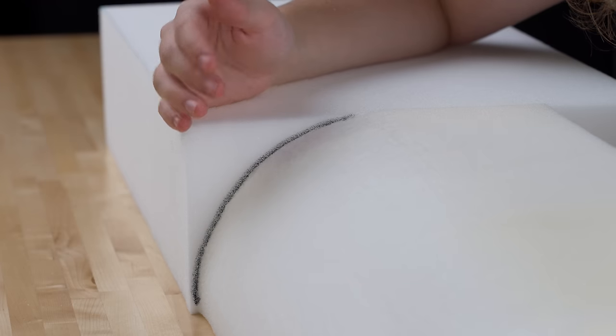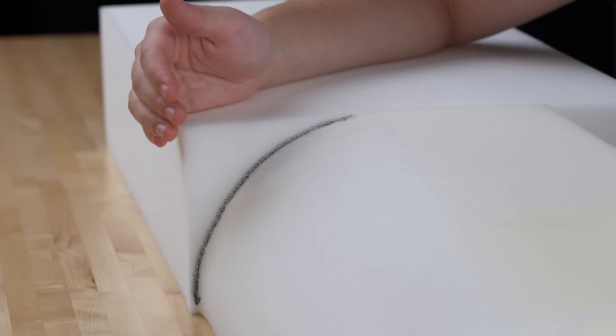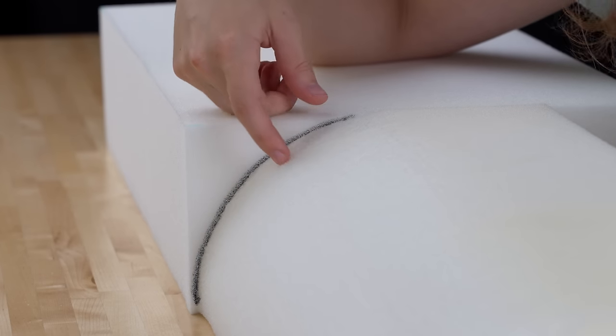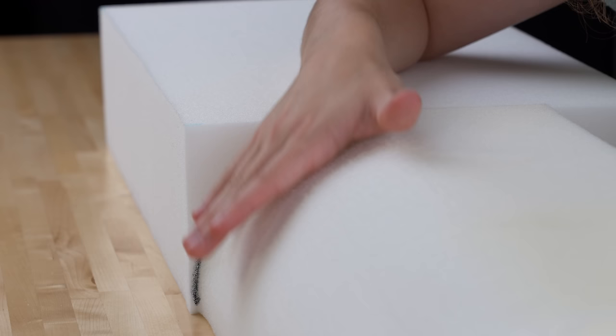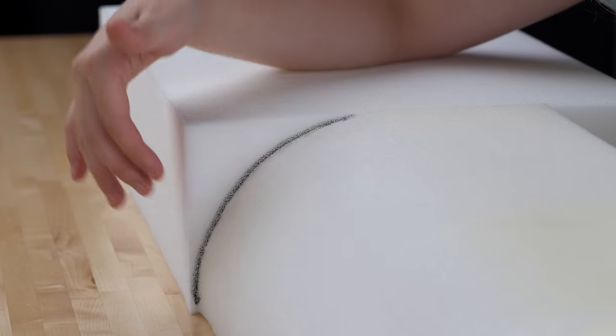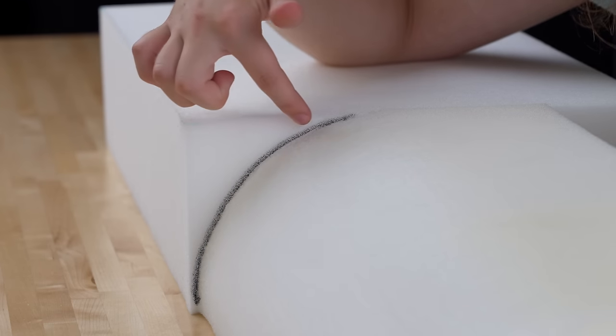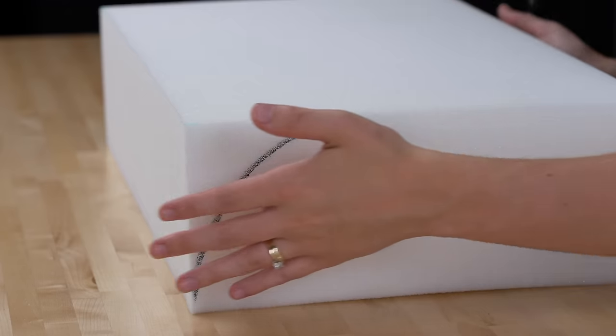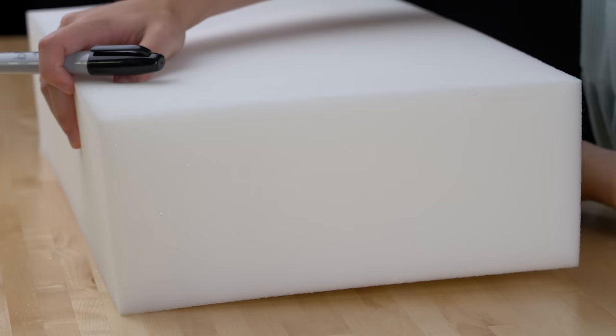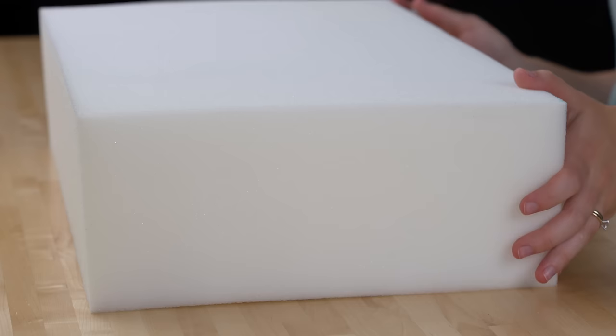It's important to note that if you're replacing foam and you're using that as your reference, you might want to draw your line slightly higher than the actual reference because foam tends to compress as you use it. So you'll want to counteract that by having a line a little bit higher. Then we're going to flip it around and do the same thing to the other side.